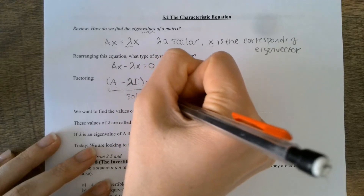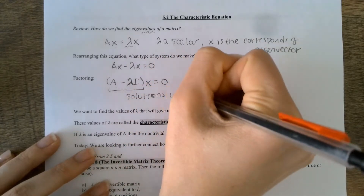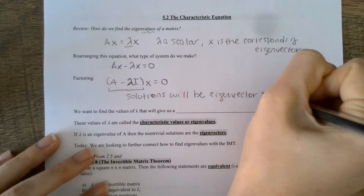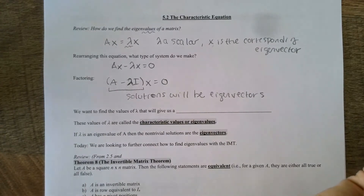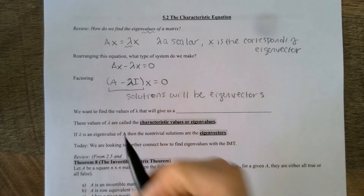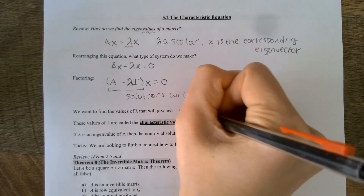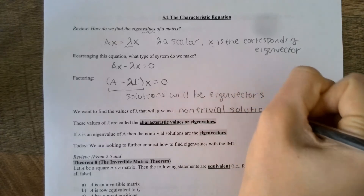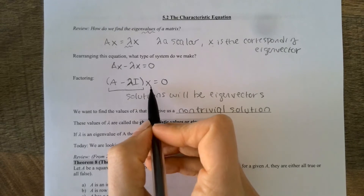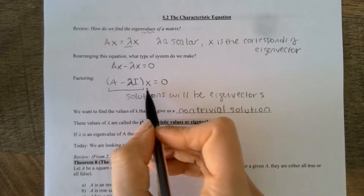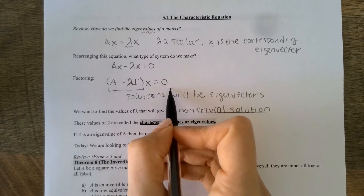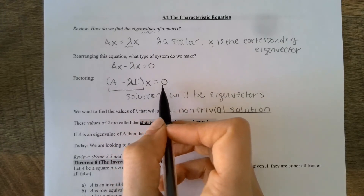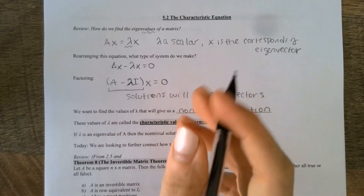Solutions will be eigenvectors, and we row reduce to find that solution. The idea though is we want to find these lambda values that give us a non-trivial solution. The reason we want a non-trivial solution is getting the trivial solution doesn't tell us anything about lambda. Putting a zero vector here is of course going to make everything equal to zero because, as you've known for a while, anything times zero should be zero.